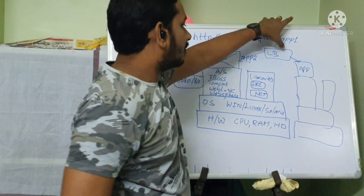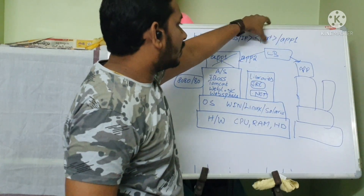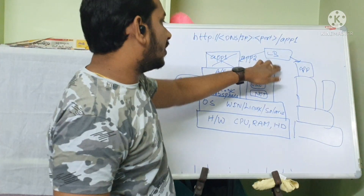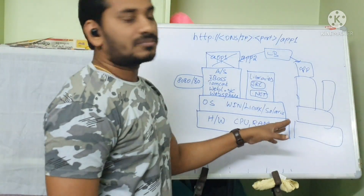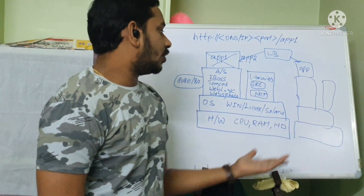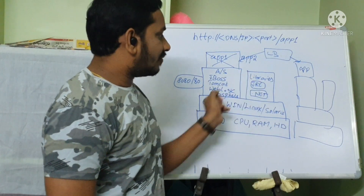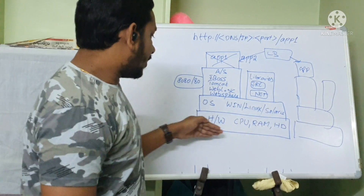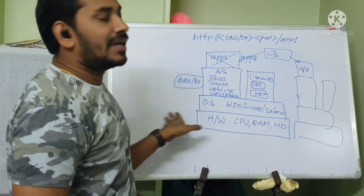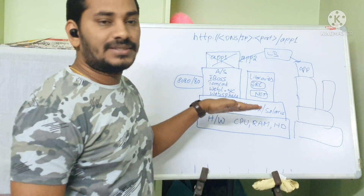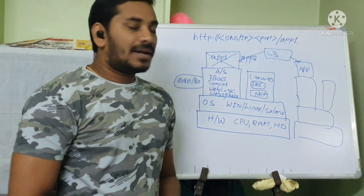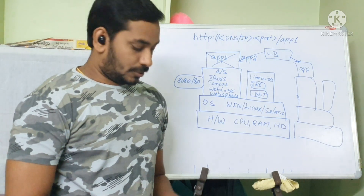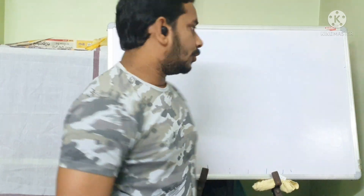In front of these two servers you place a load balancer. You access the application via the load balancer's IP and port, and it evenly distributes traffic between the two servers. If one server goes down, the other continues to serve the application. As the app becomes more critical, you keep adding more servers. Now let's discuss the disadvantages of this physical server approach.